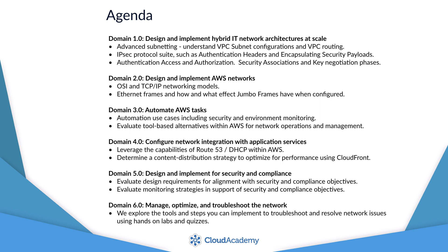We cover content under the six domains outlined in the AWS exam guide. In the first series of lectures, we learn how to define network architectures on AWS, how to derive an appropriate architecture, and how to evaluate and optimize for performance and cost.